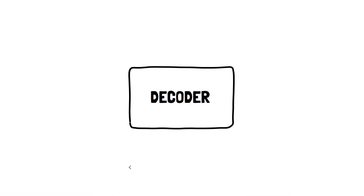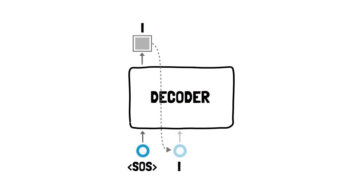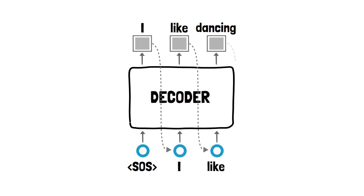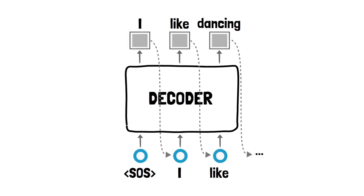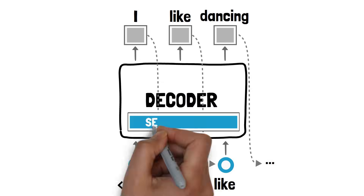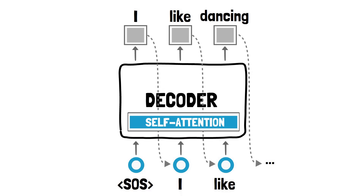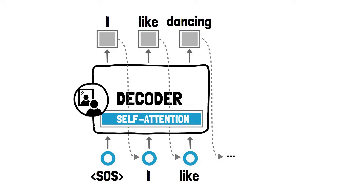In the last episode we saw how the decoder component of the Transformer excels at text generation, one token at a time. It uses self-attention to allow the model to consider the context of the entire sentence when predicting the next word.